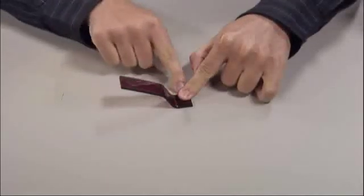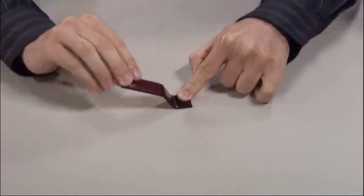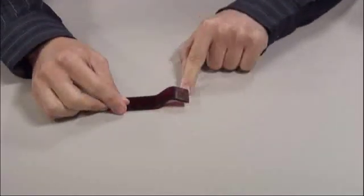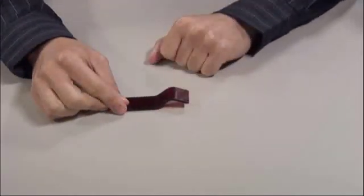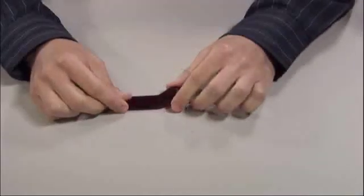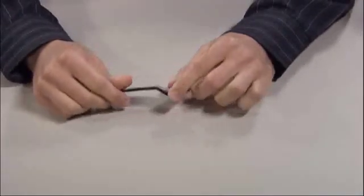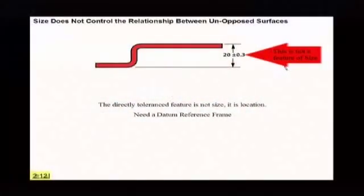So really the problem is there's no datum here. It doesn't tell you, am I supposed to start from the short surface and measure to the long one? Am I supposed to start on the long one and measure to the short one? It really doesn't say. So I think you have a solution to this, don't you? Yeah, we do. In other words, this here is not a feature of size. It is really location. In other words, what you want to do is you want to set one at zero and you want to measure to the other one.